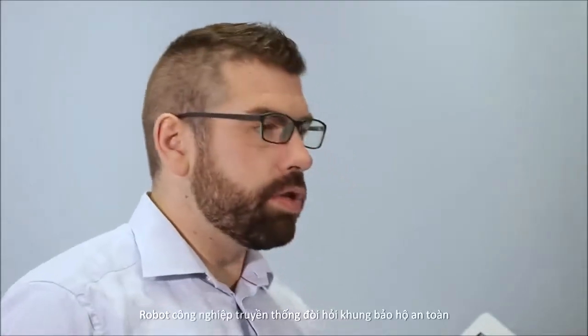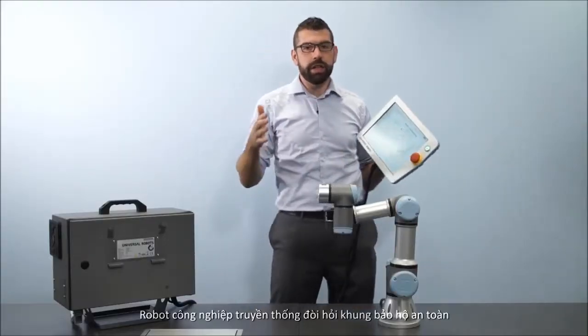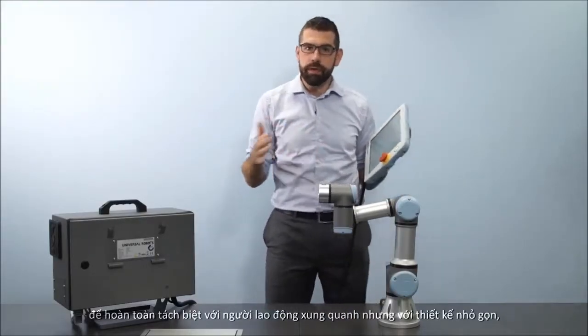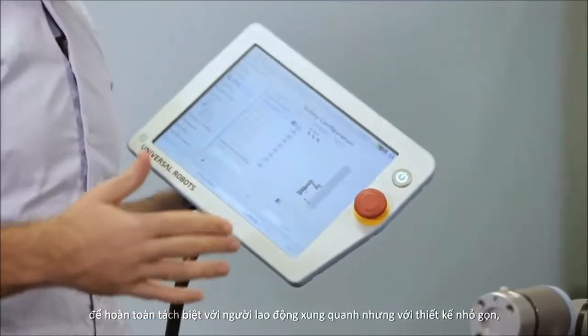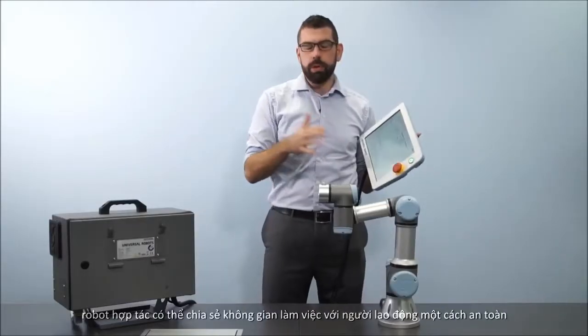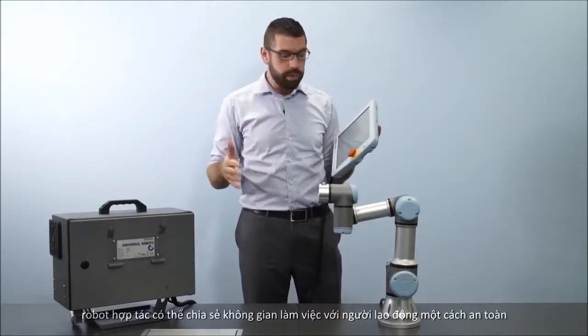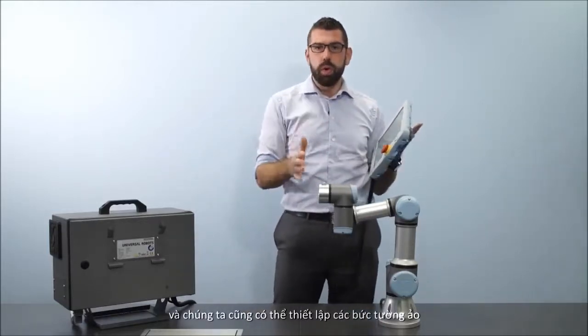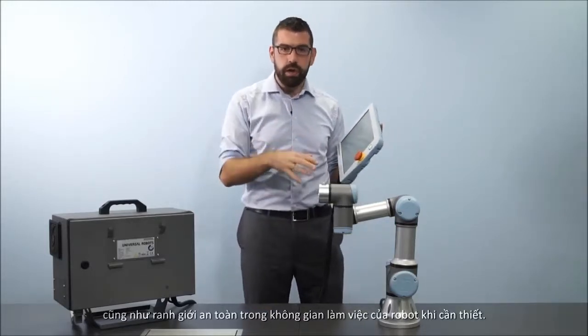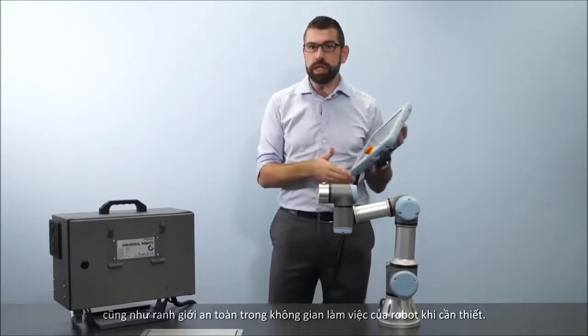A traditional industrial robot requires safety caging to completely separate it from any human workers around it. But with a lightweight collaborative robot, the robot can safely share its workspace with a human worker, and we can also add virtual walls and safety boundaries in the robot's workspace to restrict it where necessary.